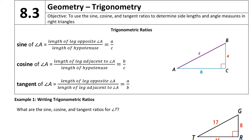The three trigonometric ratios are sine, cosine, and tangent. Sine is the length of the opposite leg divided by the length of the hypotenuse. The cosine of an angle is the length of the adjacent leg divided by the length of the hypotenuse. The tangent of an angle is the length of the opposite leg divided by the length of the adjacent leg.